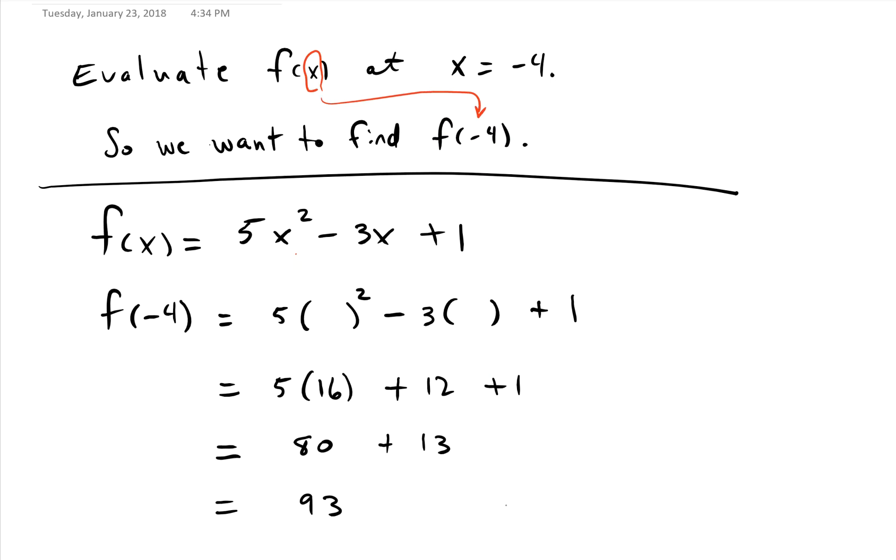So if they give us this as our f: 5x squared minus 3x plus 1, and then they say find f of negative 4, then everywhere there was an x, we are going to input a negative 4.